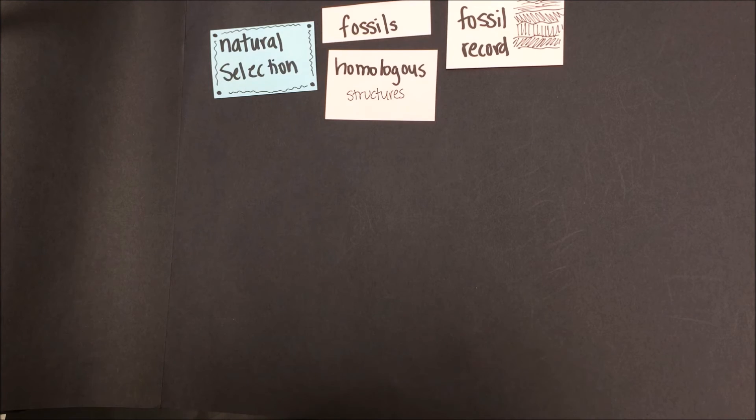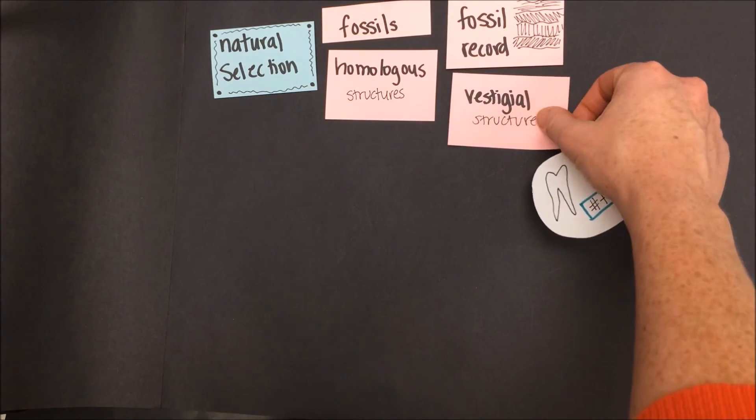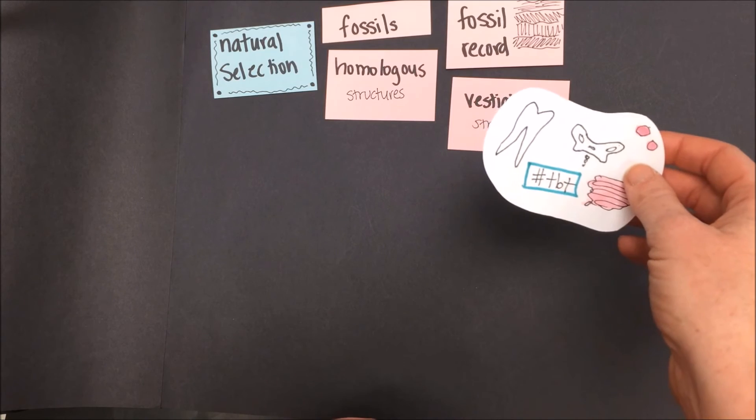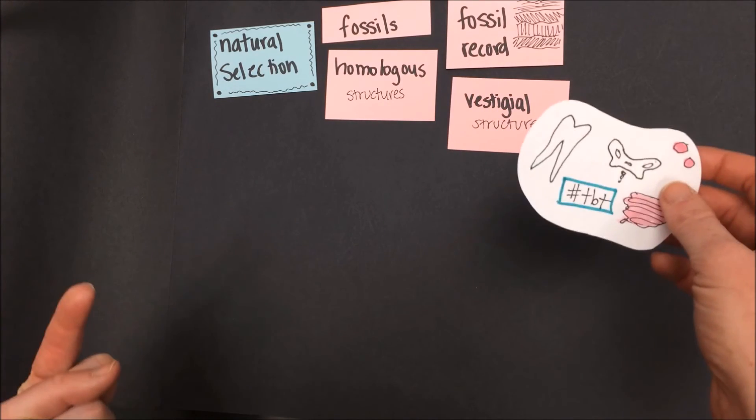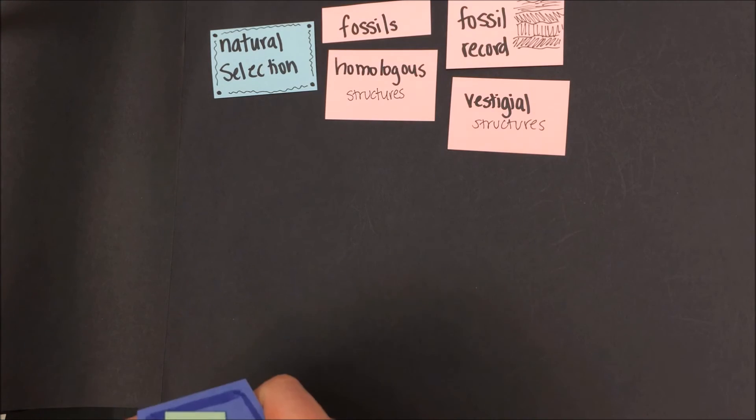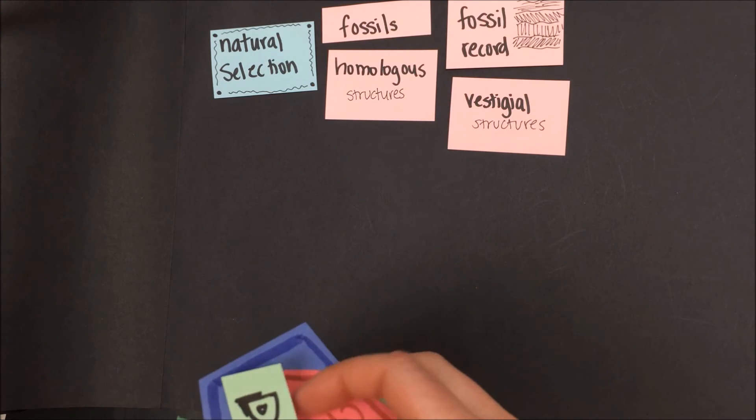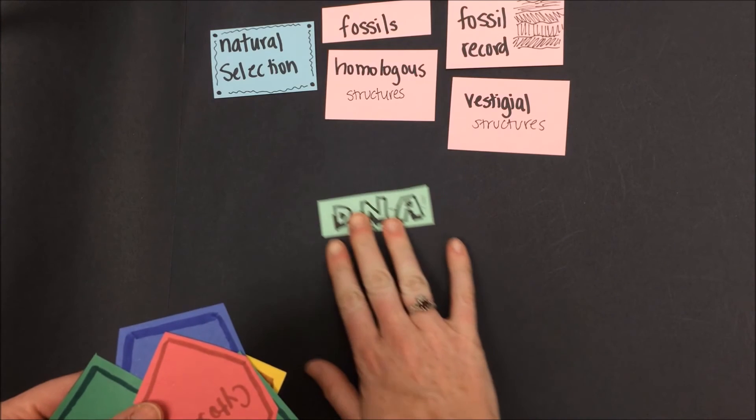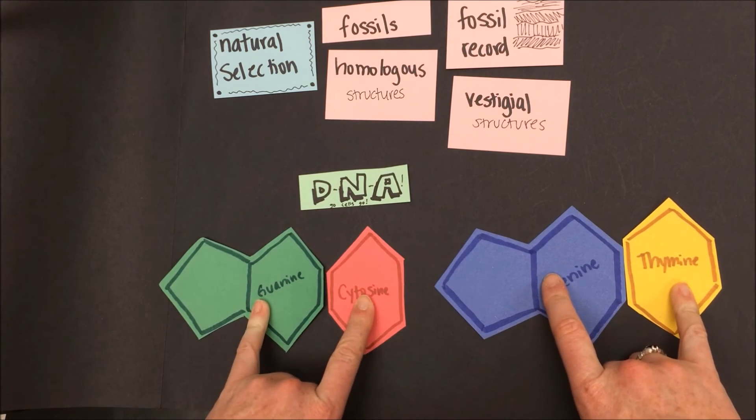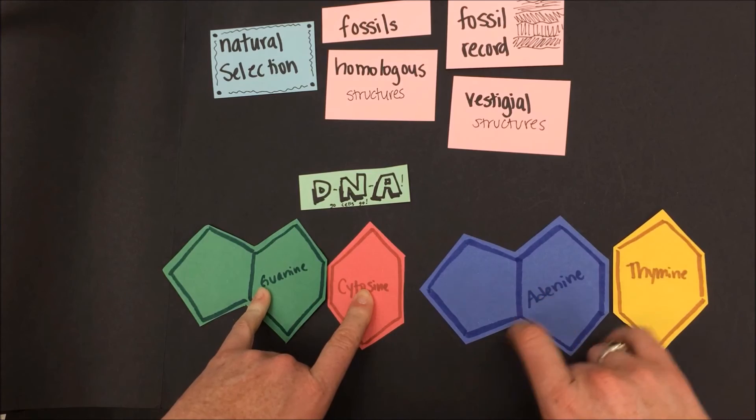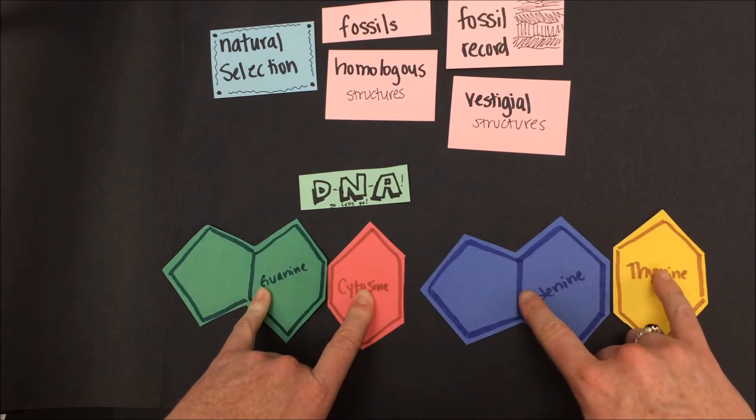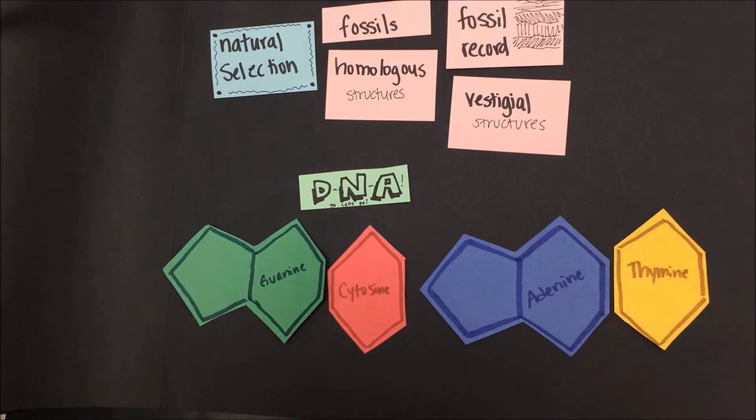Other structures that provide support for natural selection are the vestigial structures we talked about before. The fact that these are no longer useful today but were perhaps useful in another time suggest that evolution is occurring even today. But perhaps the most compelling evidence for natural selection and evolution is that of DNA. No matter how old or young, big or small these organisms are on earth, all life on earth has DNA that is made up of these four base pairs. These commonalities suggest that life has existed on earth for a long time and that this life is constantly changing.